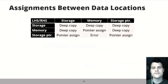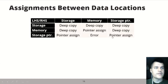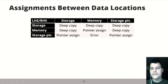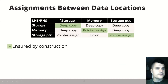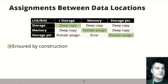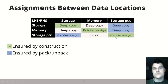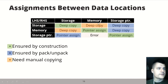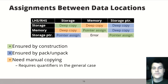There is no mixing between different data locations — no pointers in storage and no values in memory — but it is still possible to make assignments between the two locations, sometimes resulting in deep copy and sometimes in pointer assignment. A nice property of our encoding is that semantics within the same location are ensured by construction, interaction with storage pointers is ensured by packing and unpacking, and interactions between different locations like memory and storage need deep copy, which requires quantifiers in the general case but in a decidable fragment.